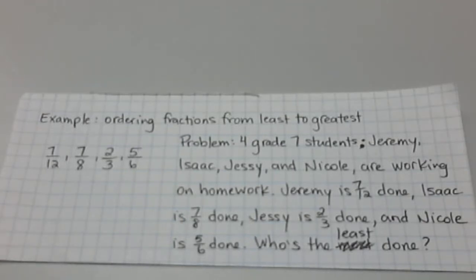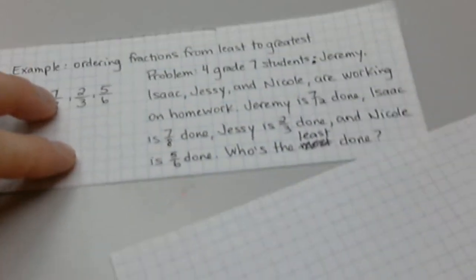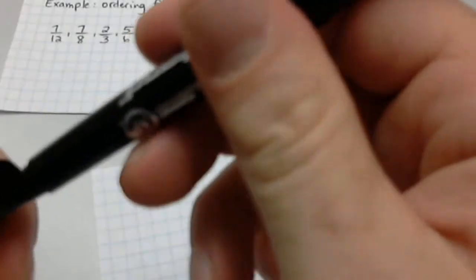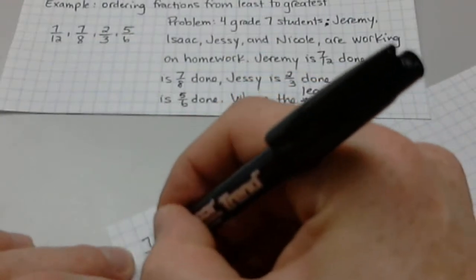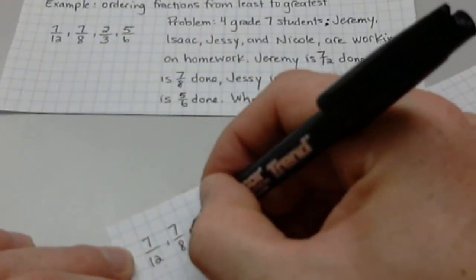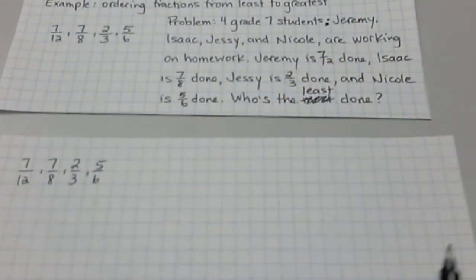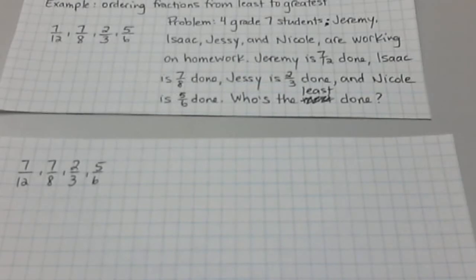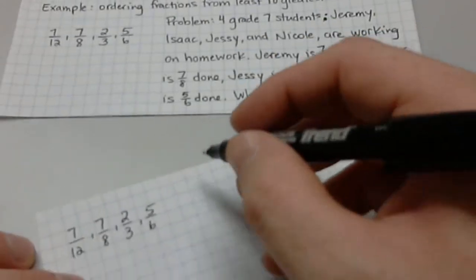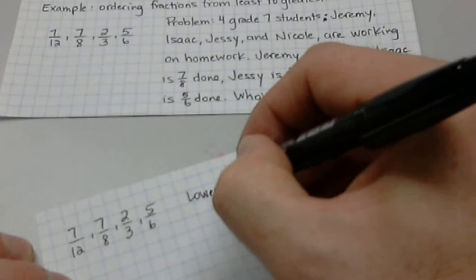Okay, so what we're going to do is have a second sheet of paper, and we're going to write out these fractions. So we have 7/12, 7/8, 2/3, and 5/6. Now, what we're going to start by doing is think back to some stuff that we talked about a few units ago, about something called greatest common factor, because we need to remember that topic to help us out with equivalent fractions.